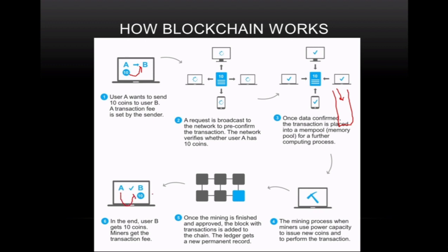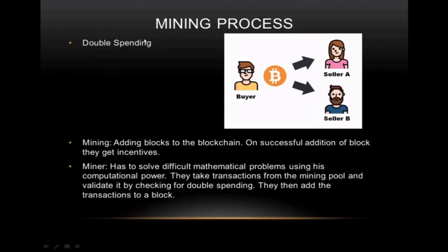Now let's look at what double spending is. A buyer has bought something from seller A and seller B, and he has to pay them. He has a total of 50 coins in his wallet. What he does is send 50 coins to seller A and 50 coins to seller B at the same time. This is known as double spending, and it used to be a huge problem in previous banking systems.